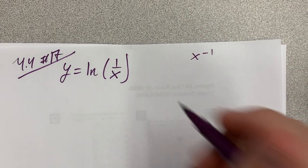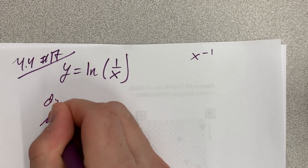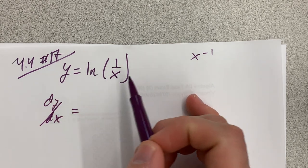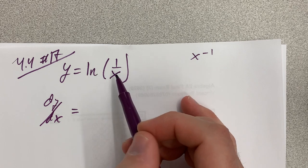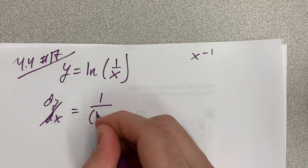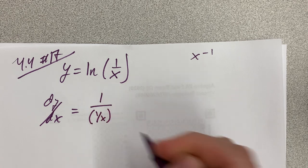And then, dy dx will be the derivative of natural log of u, which is 1 over u, so 1 over 1 over x, we'll just put that in parentheses for now.